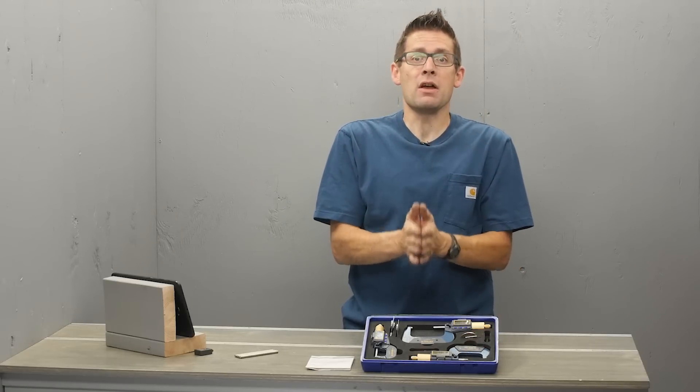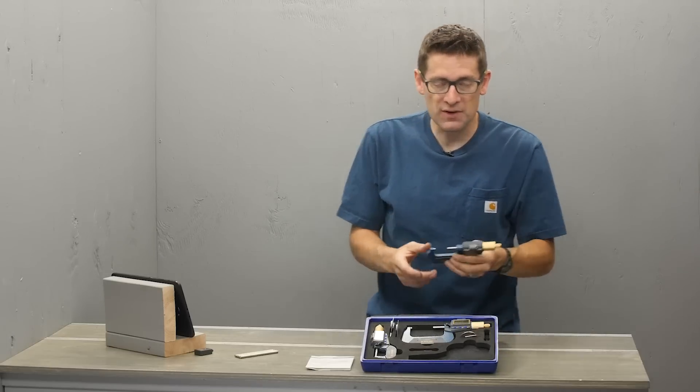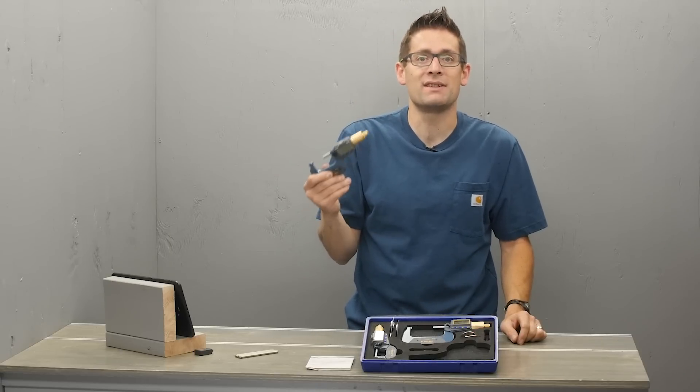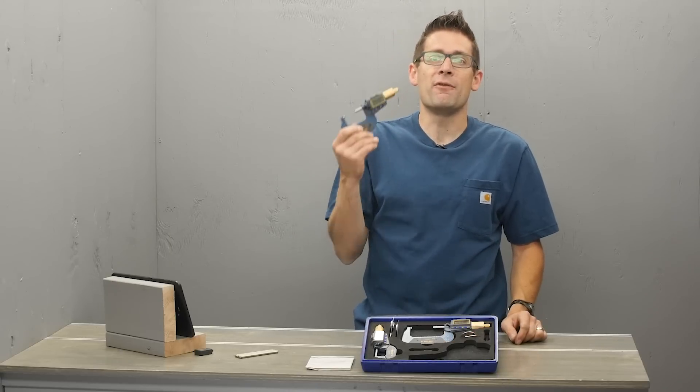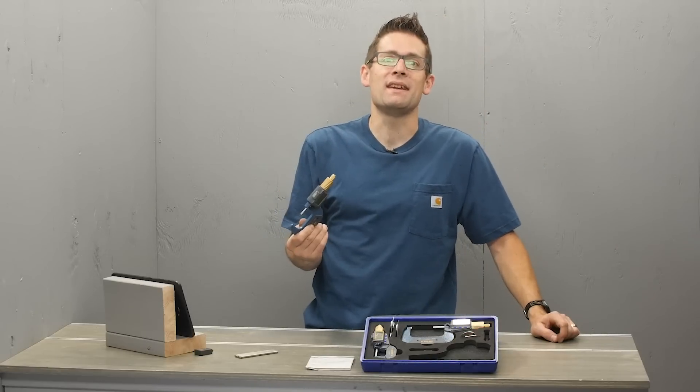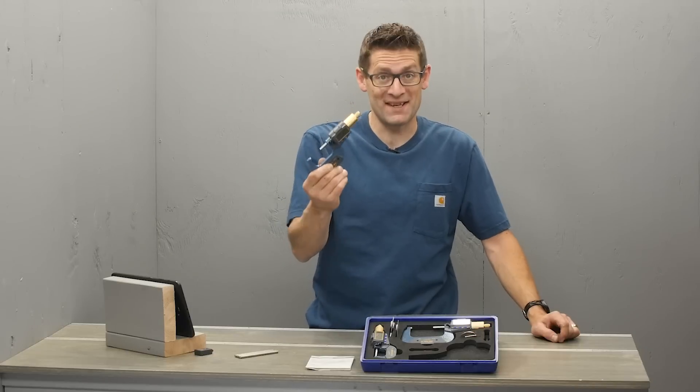It's the new Easy Data Micrometer series from iGauging. That's right. These tools have a half-tenth resolution and an accuracy of a tenth and a half, making them very versatile around the shop. And what's more, they're really easy to interface with your tablet, your PC, or your phone. Let's see how they work.